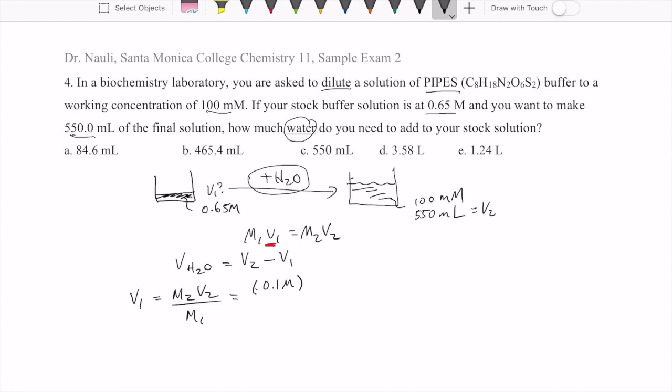The molarity could be written as 0.1 molar, which is the same as 100 millimolar. The volume here could stay as milliliters because we're just trying to solve for another volume. We can use that same unit at the end. 0.65 molar is M1.